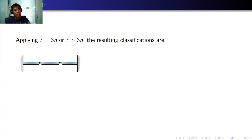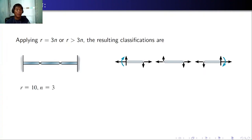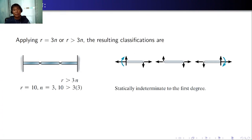For the last beam example with three interconnected members: n equals 3, and there are two reactive forces at each internal joint, plus three for the peak support, giving r equals 10. Since r is greater than 3n (which is 9), this is statically indeterminate to the first degree. I hope you can apply this equation to determine if a structure is statically determinate or indeterminate.